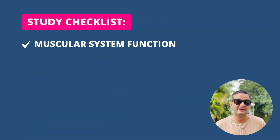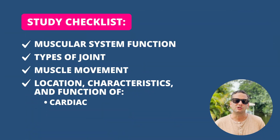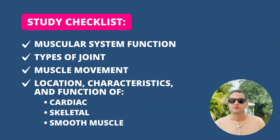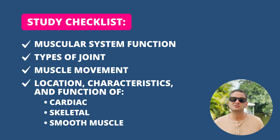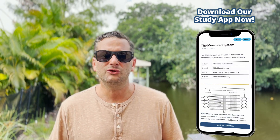For the muscular system, you need to know the anatomy — including the types of muscle tissues — the roles of the muscular system in movement, the physiology of muscle contractions, and the three types of joints. Example exam questions might include: which muscle or region surrounded by a muscle is under voluntary control?